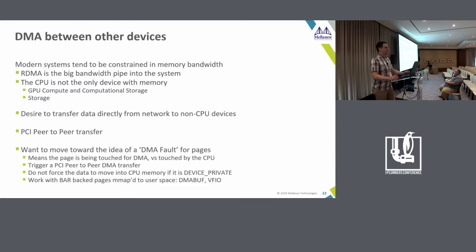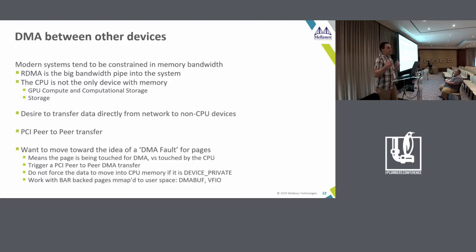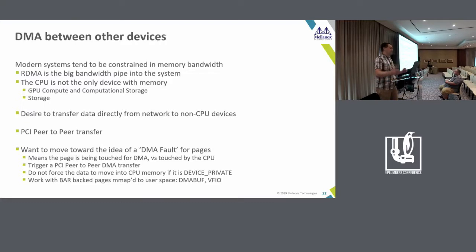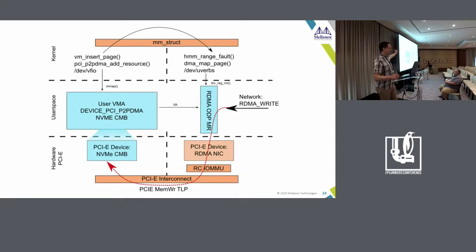Another topic to be discussed Wednesday morning is DMAing between devices — peer-to-peer transfers on PCI. This becomes very interesting for RDMA as it is essentially the fastest pipe into and out of your system. We now have support for that in the kernel between certain cases with NVMe devices, and we'd very much like this extended to user space. There's going to be an entire track on that Wednesday.